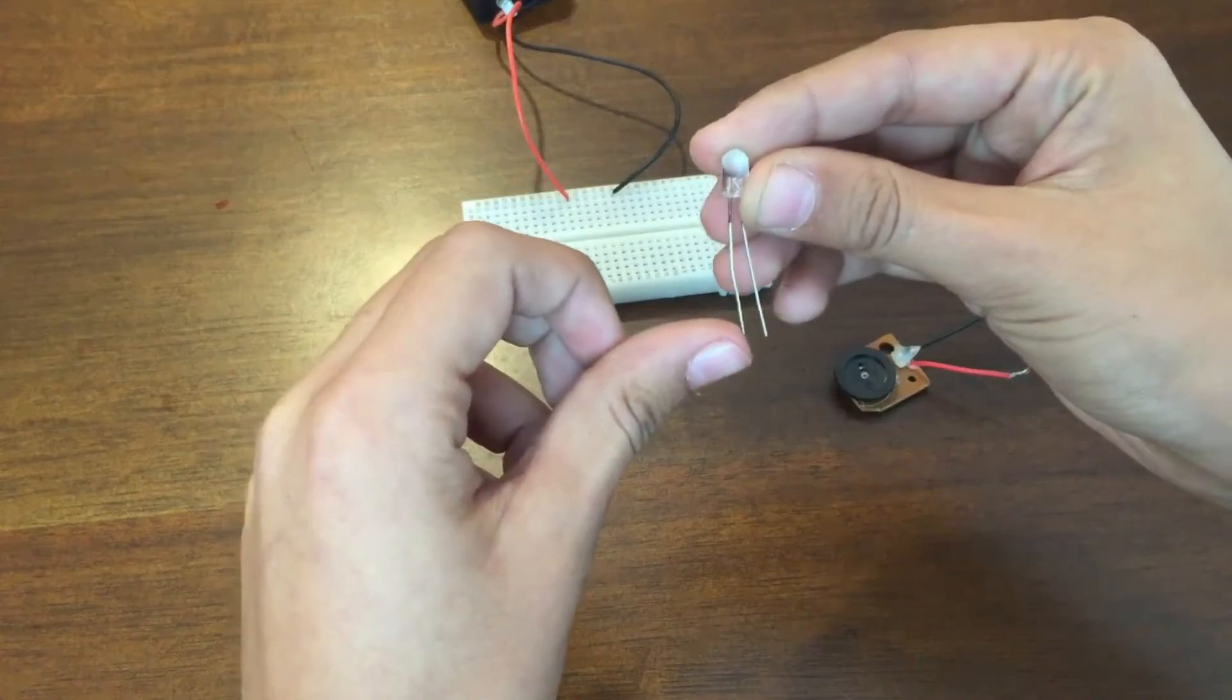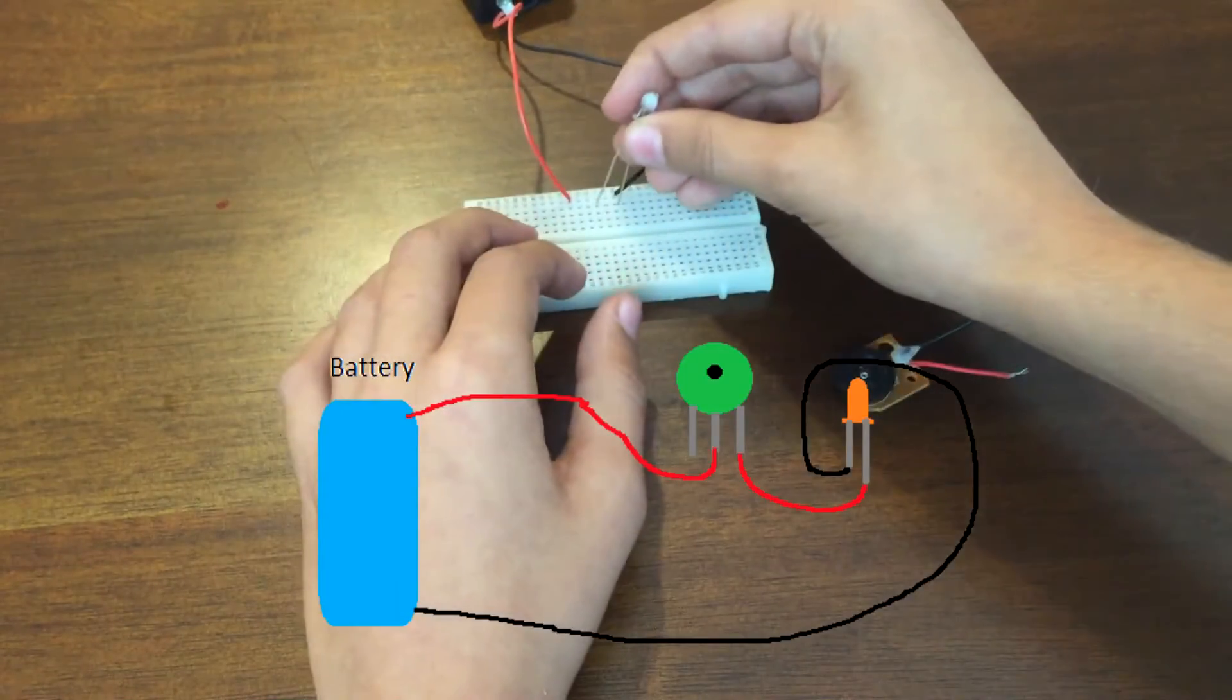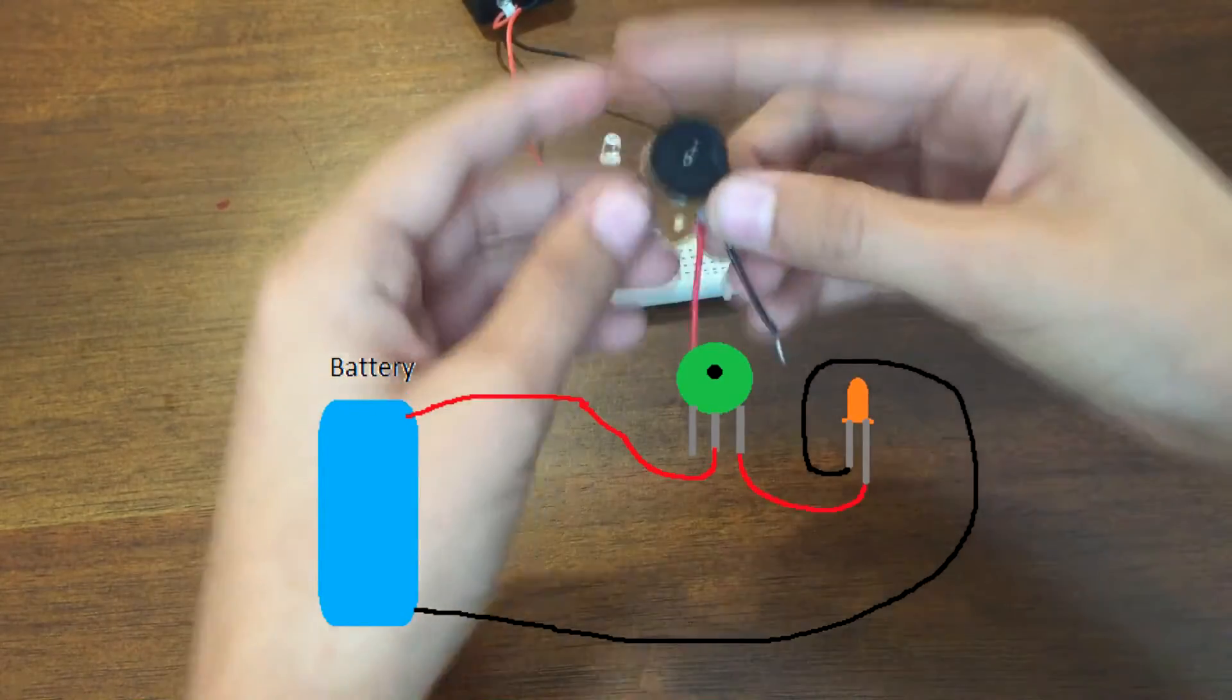So go ahead and get the negative part of your LED, which is always the shorter one, and put it straight up onto the negative part of your battery. We're not going to be dealing with that.